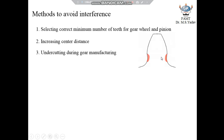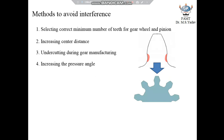The undercut gears appear something like this. The fourth method is increasing the pressure angle. By increasing the pressure angle, the points of tangency once again shift away from points K and L. The effect is similar to increasing the center distance, which was discussed in method number 2.